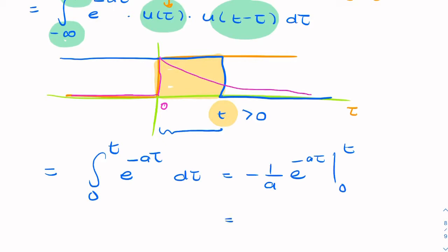If you substitute the limits, you get minus one over a, e to the minus at minus one. Where did the one come from? Well, that's just e to the zero. And we can get rid of this minus sign. We can tidy it up a little bit and say one over a times one minus e to the minus at. So that is my answer.